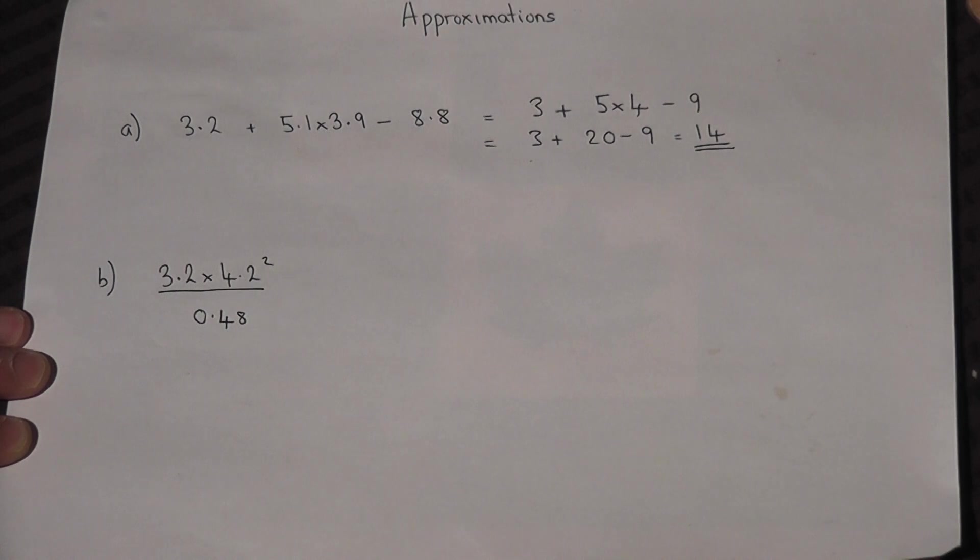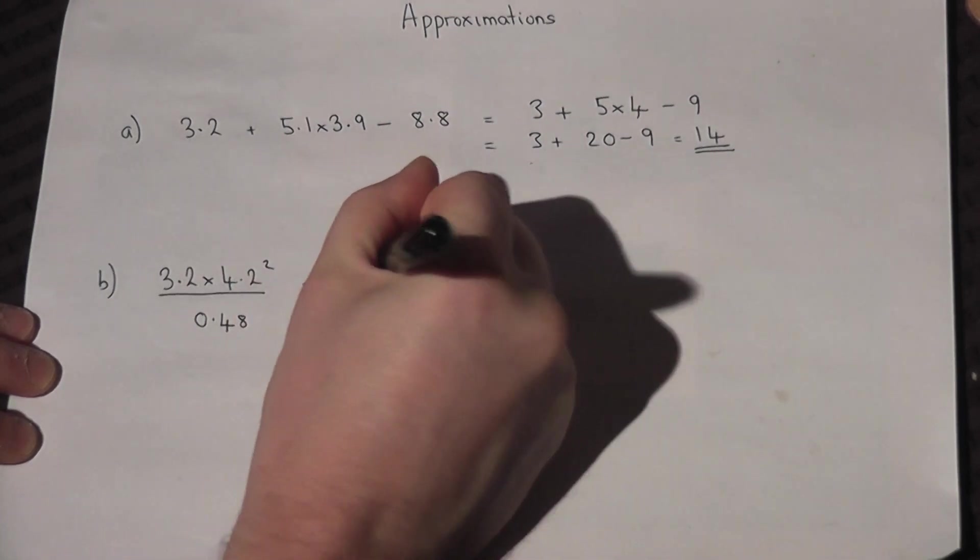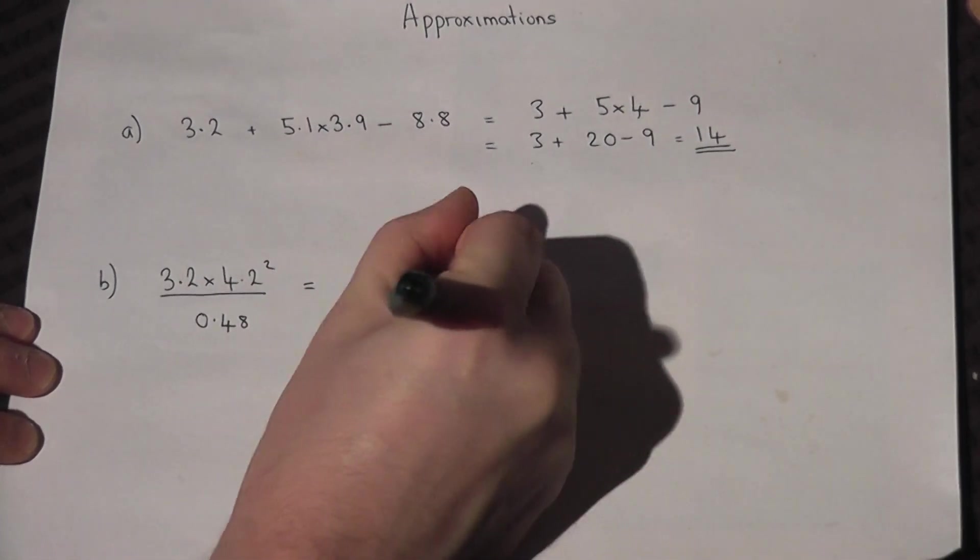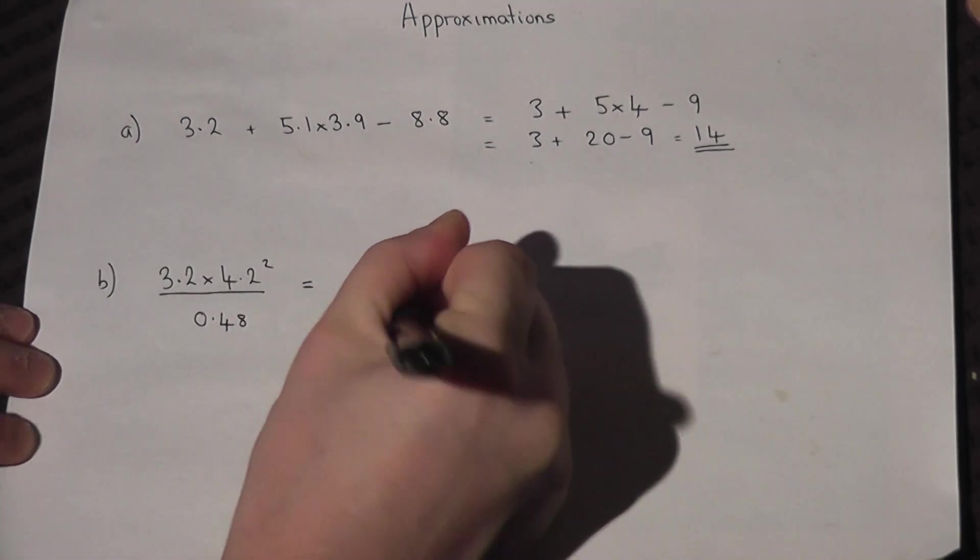The second one looks a bit more complicated and might be worth an extra mark. So we round all the numbers first. Now the bottom is closest to 0.5.